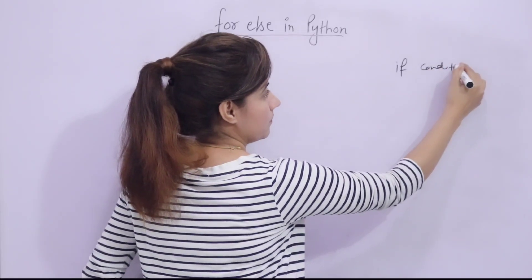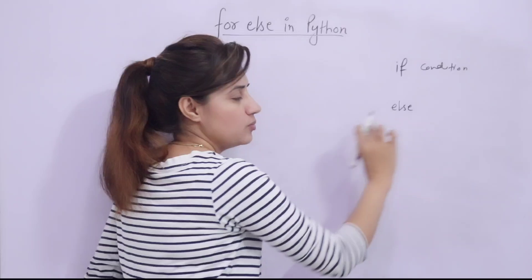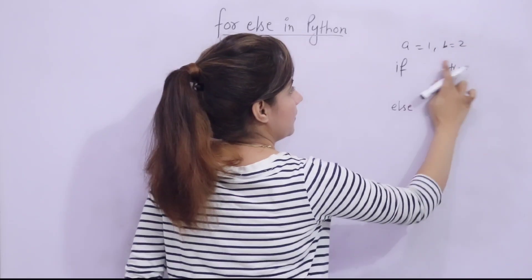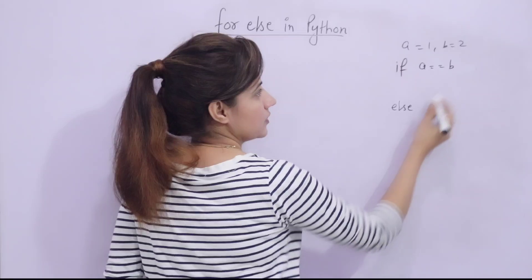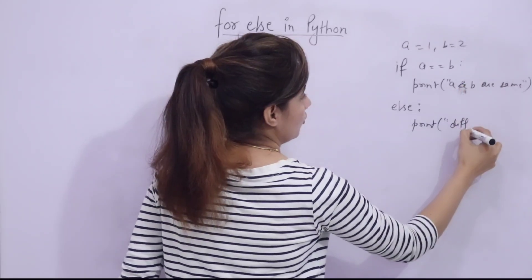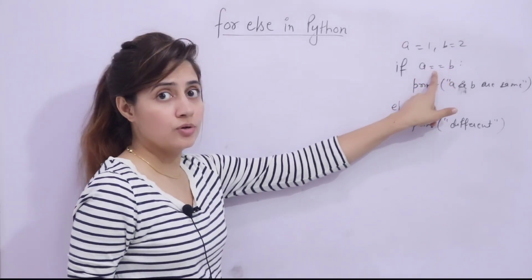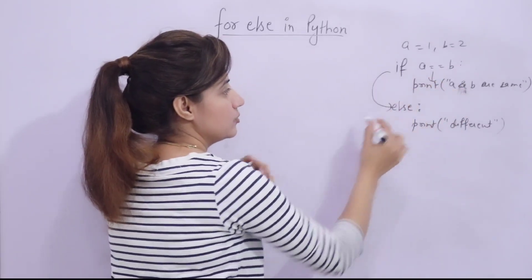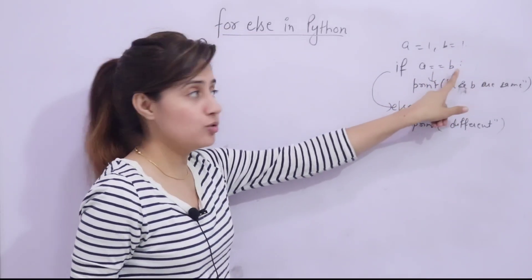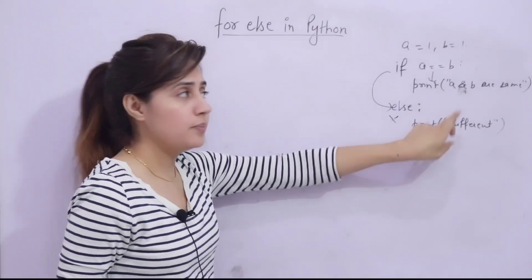In if-else, either the if block or the else block is executed — not both. For example, if a = 1 and b = 2, and we write 'if a == b: print a and b are same', then 'else: print we are different'. Since a is 1 and b is 2, the condition is false, so control goes to else and prints 'different'. If a = 1 and b = 1, the condition is true and it prints 'a and b are same'.